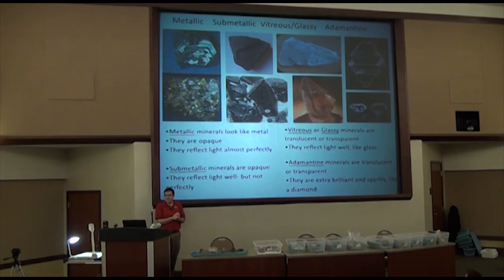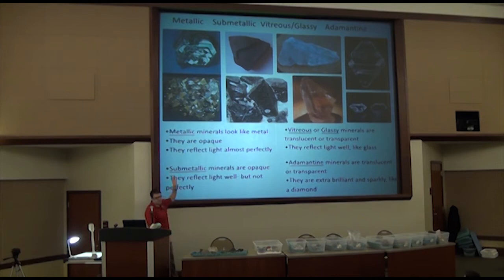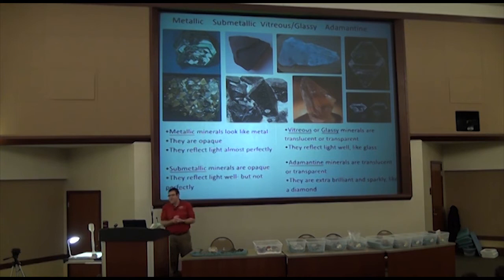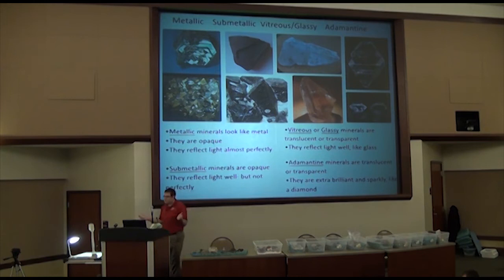Here are visual examples of luster types. Metallic samples — like hematite and pyrite — are opaque and reflect really well. Submetallic is similar but not quite as reflective. Adamantine refers to diamonds or particularly sparkly quartz — really shiny and sparkly. Vitreous or glassy — both words are used interchangeably — means something glassy, with quartz being a good example.